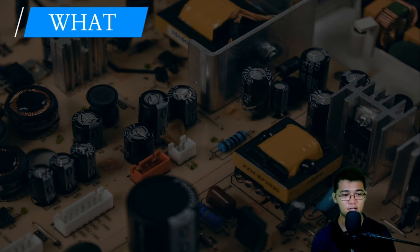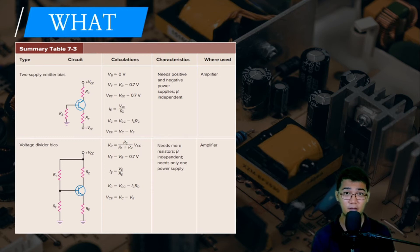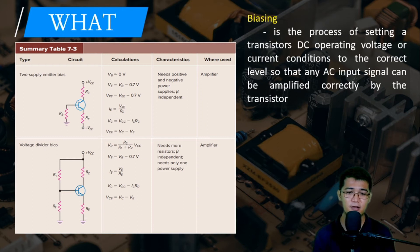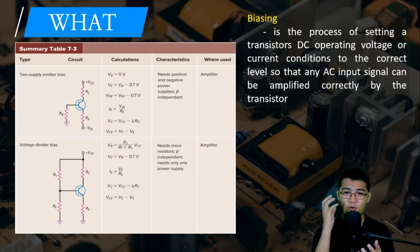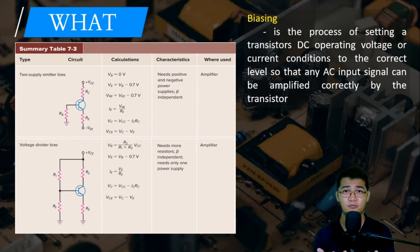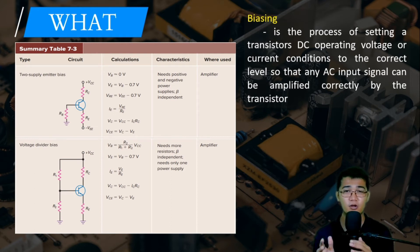The two configurations are: the two-supply emitter bias and the voltage divider bias. Biasing is the process of setting the transistor's DC operating voltage or current condition to the correct level so that an AC input signal can be amplified correctly by the transistor. These are patterns — when you spot these connection patterns of supply and resistors to our transistor, you can identify whether it is used as an amplifier or as a switch.